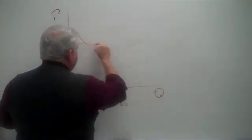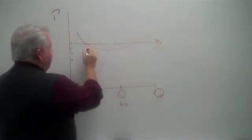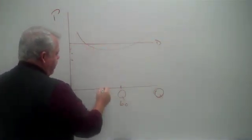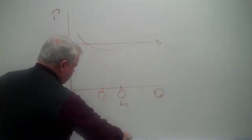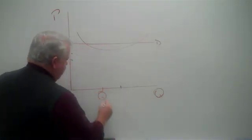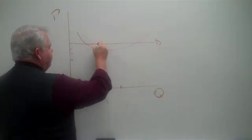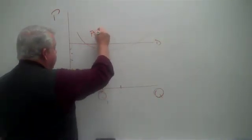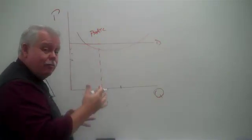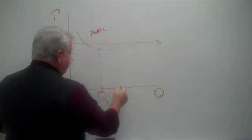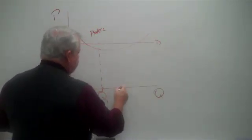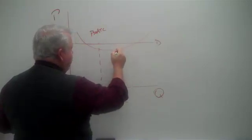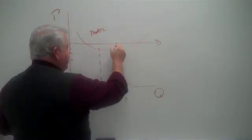For example, let's draw this again just for a second. What's going on for the company if they operate right here, Q1? Well, at Q1, when we read up, what do we see? The price is more than the average total cost. So they're making a profit. That's also true here at Q2. There's the average cost. There's the price. They're making a profit.